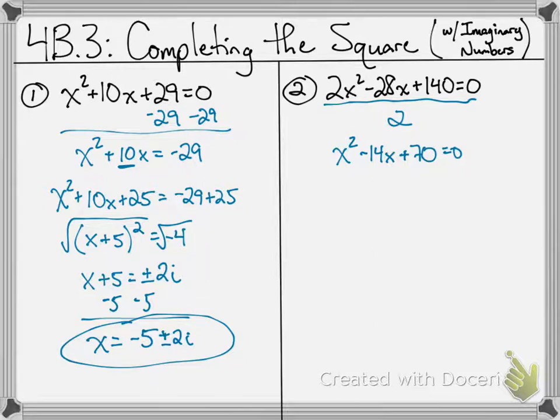Now, once you do this, same exact process. So from here, I can make sure my variables are on the left, my variable terms, my regular number, my constants on the right. So I'm going to have x squared minus 14x equals negative 70.